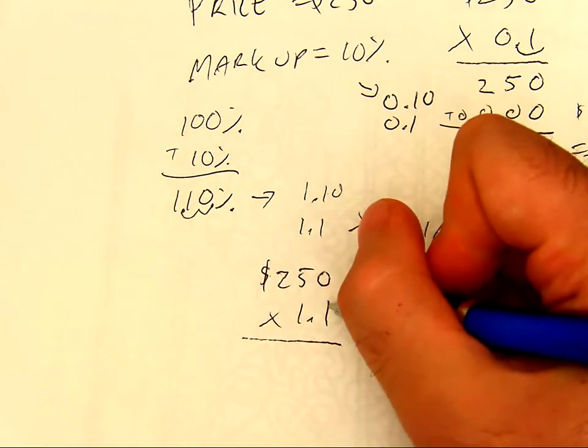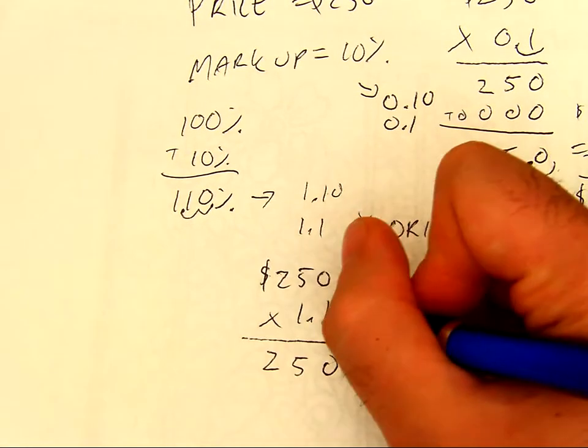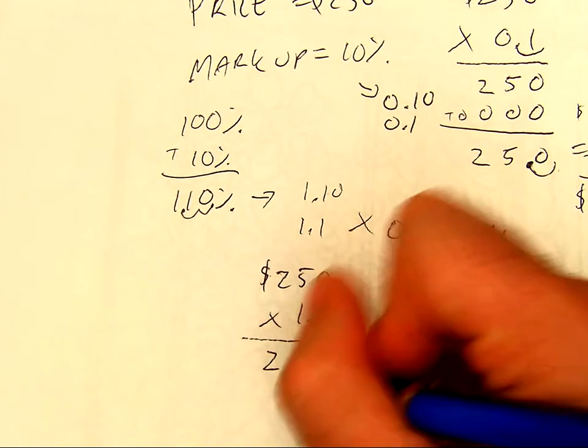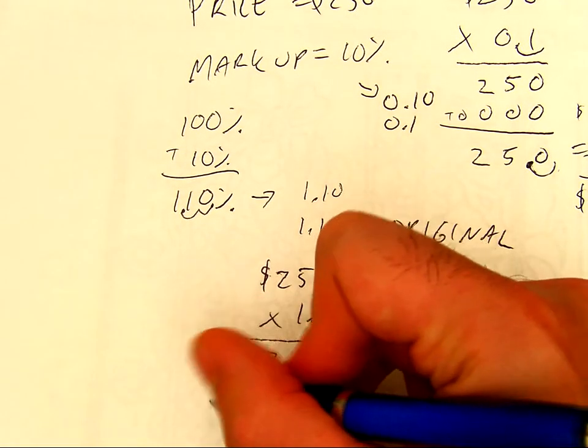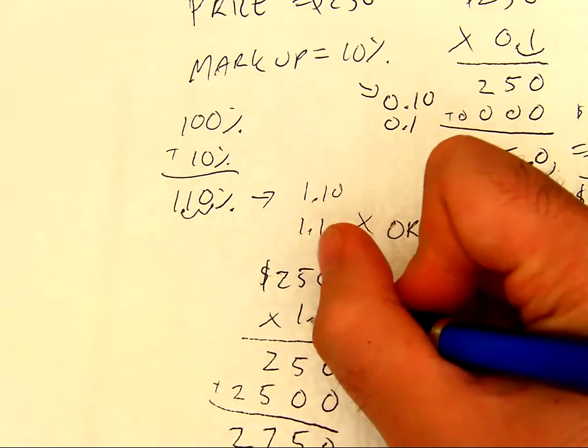I'll do this. I have 1 times 0 is 0. 1 times 5 is 5. 1 times 2 is 2. Now, I have a placeholder, 0. 1 times 0 is 0. 1 times 5 is 5. And 1 times 2 is 2. I add them up. And I have 1 decimal place.